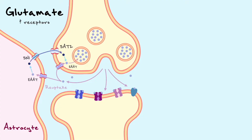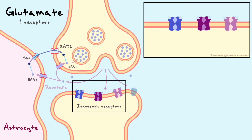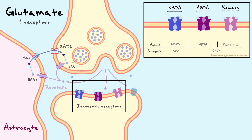Back to the synaptic cleft, let's now see what receptors glutamate interacts with. These receptors can either be ionotropic or metabotropic. There are three major types of ionotropic receptors: NMDA, AMPA, and kainate. Similar to acetylcholine receptors, the nomenclature comes from the agonists that open them. These three receptors also have antagonists — the drug AP5 blocks the NMDA receptors and the drug CNQX blocks the AMPA and kainate receptors. These compounds will be important later to help determine properties of the channels.